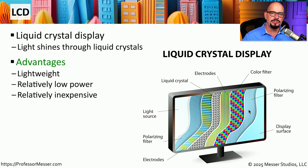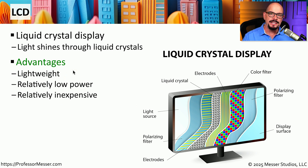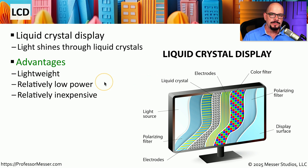Prior to LCD technology, we were mostly using large glass display tubes to show information, so LCDs provide us with some significant advantages. One of the advantages is that these displays are relatively light — we can put them almost anywhere, hang them on a wall, or make them part of a portable system. These also use relatively low power, so they're perfect for mobile devices that run on battery power, and they are relatively inexpensive. The low cost of these displays means we can use them for practically anything where we might need some type of visual feedback.